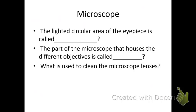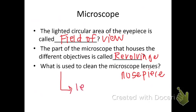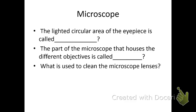The lighted circular area of the eyepiece — from the microscope lab — that's going to be your field of view. The part of the microscope that houses different objectives is the revolving nose piece. And what is used to clean the microscope? It is lens paper. I hope this was helpful — make sure you know all the answers to all of these questions before your lab exam.